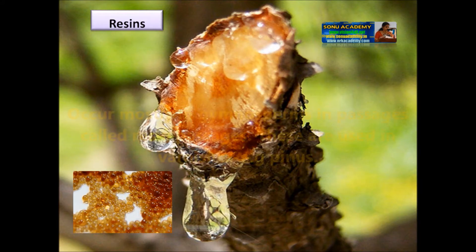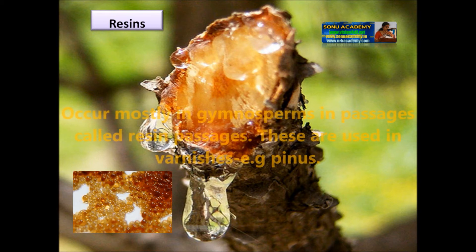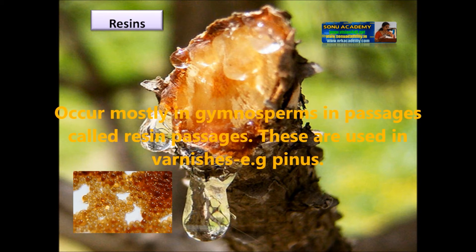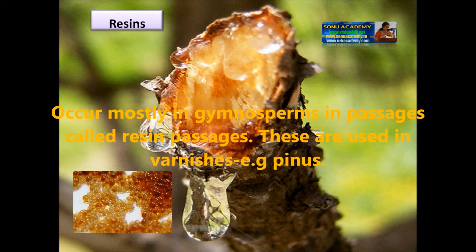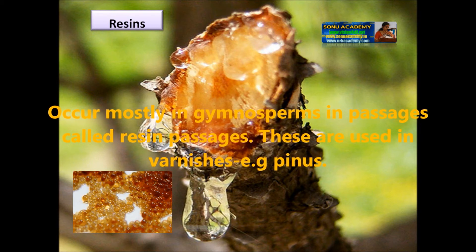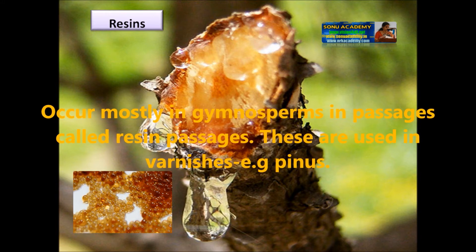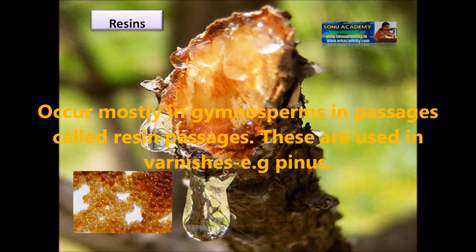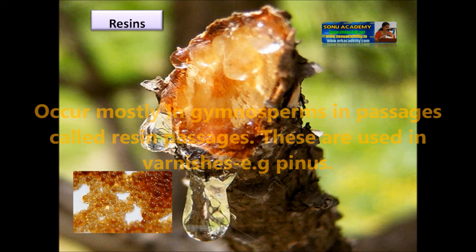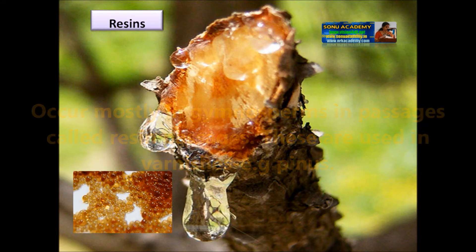Resins occur mostly in gymnosperms in passages called resin passages. They are used in varnishes. An example is Pinus.